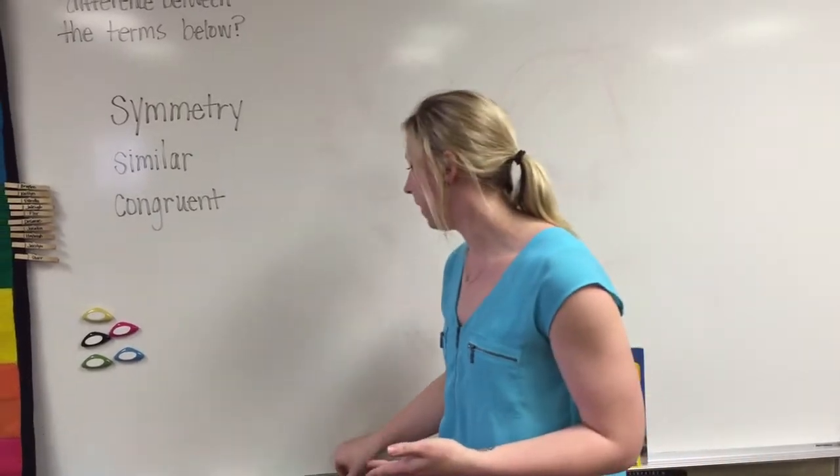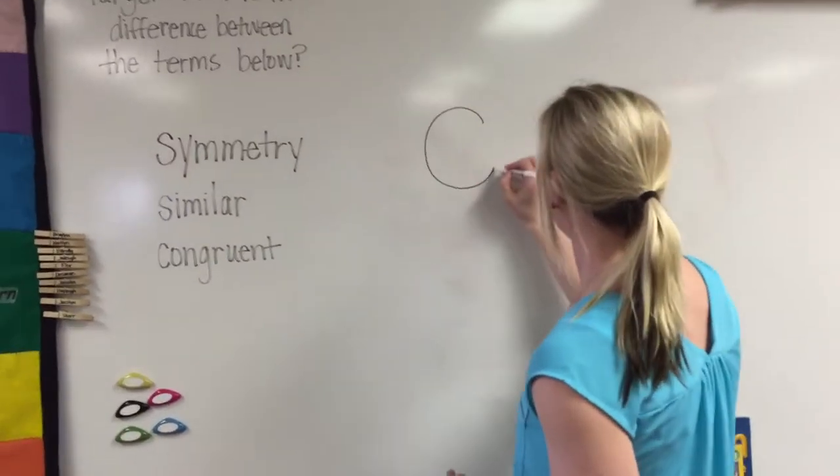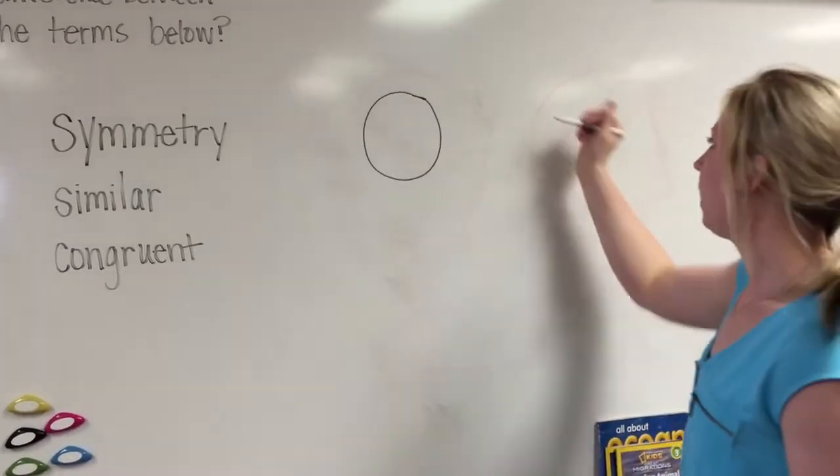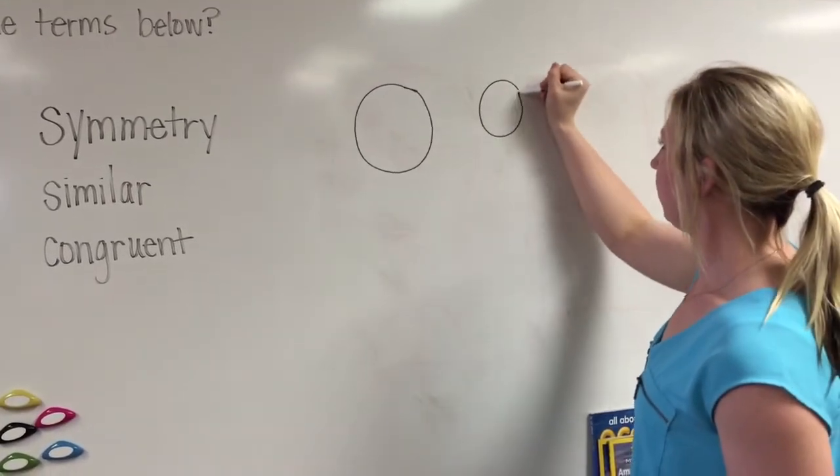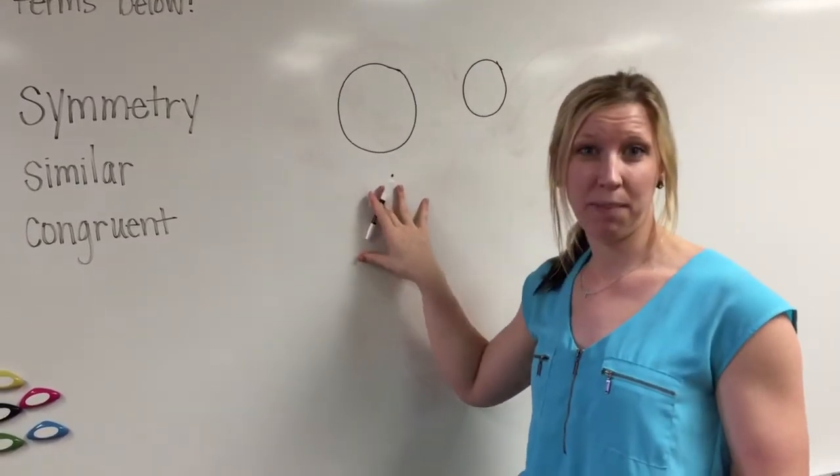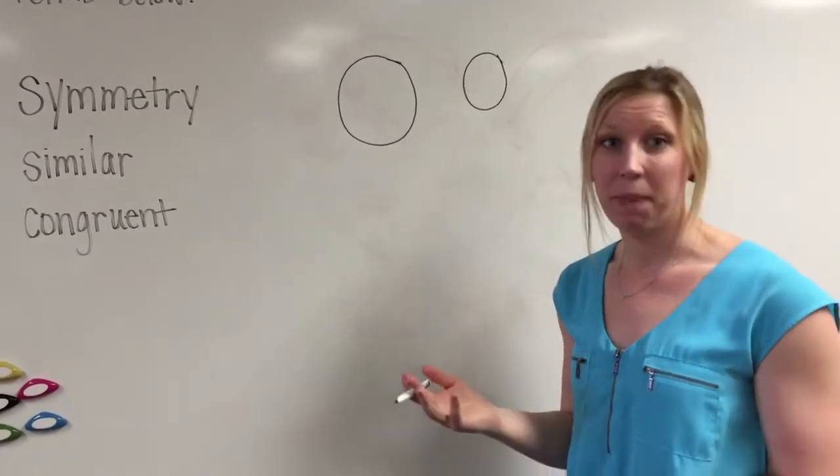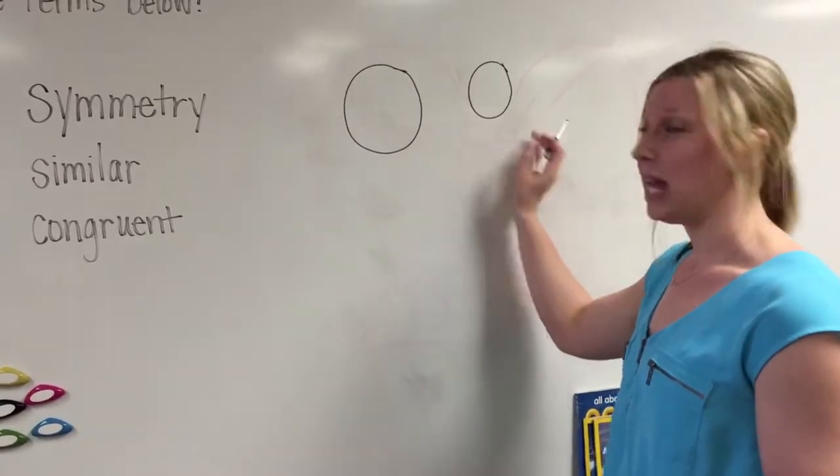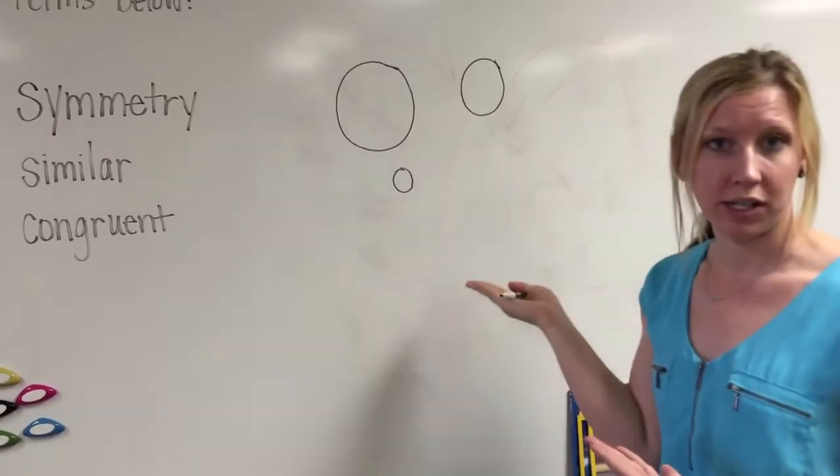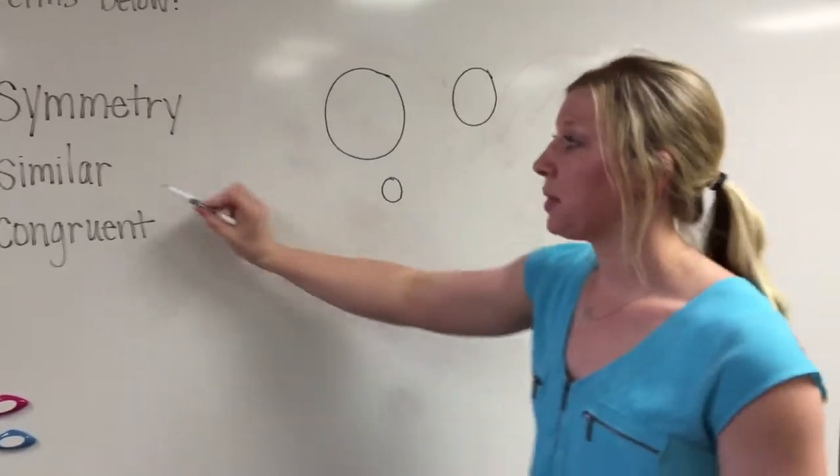So when I'm thinking of a shape like a circle, I'm gonna draw two circles. Okay, so there's one circle, and I'm gonna draw another one, but I'm gonna draw it a little bit smaller. And so what similar means is that they're the same shape, they look alike, but they're not exactly the same. This one's a little bit bigger than this one. I could even make another one that's similar to those circles. Same shape, but they're different sizes. So that's what similar means.